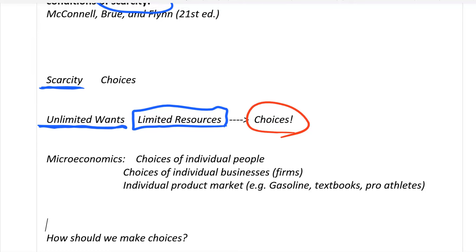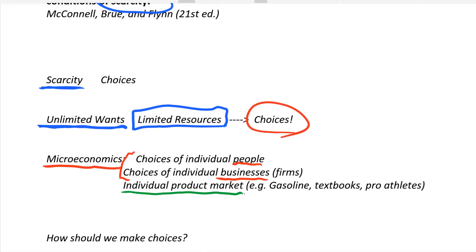Normally we divide economics into two main branches. Microeconomics — micro meaning small — is the economics of individuals. We focus on the choices of individual people and individual businesses, sometimes called firms. The largest thing we study in microeconomics is how the choices of these two groups work together to affect what's going on in an individual product market. For example, we might study the gasoline market: why is the price of gasoline going up or down, and why are people buying more or less gas? All the buyers and sellers interacting in one market — that's a core topic of microeconomics.